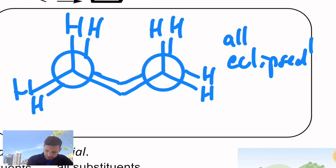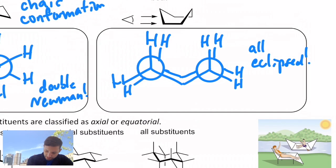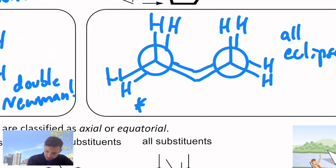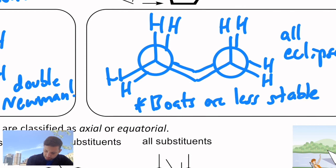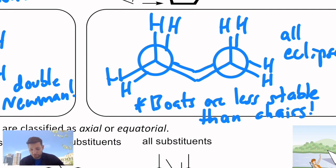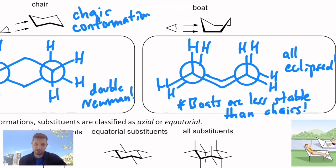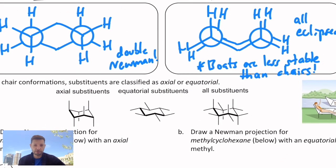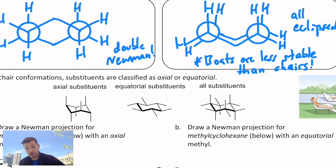All eclipsed. So the bottom line: boats are less stable than chairs. And yes, we do use these terms for everyday household objects to refer to conformations of cyclohexane rings. Even if they're not cyclohexane — you could have a heteroatom in the ring somewhere, like an oxygen or a nitrogen — you could still talk about its chair conformation or its boat conformation.